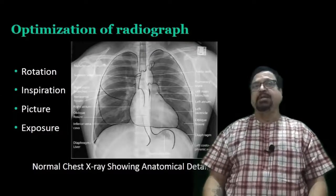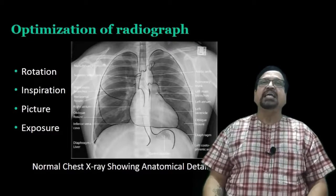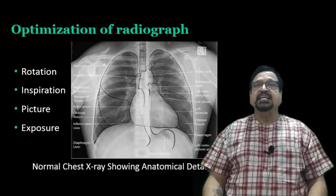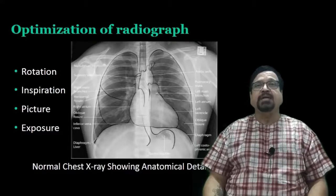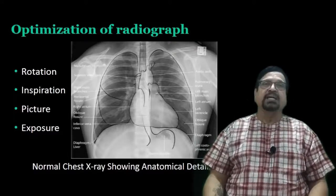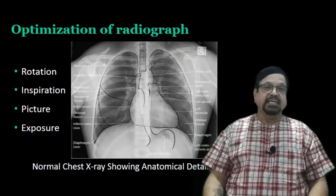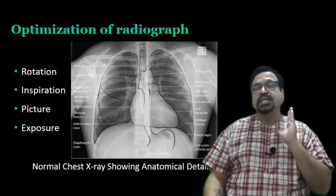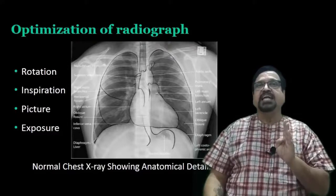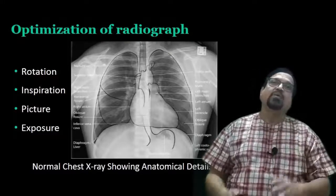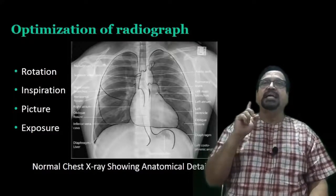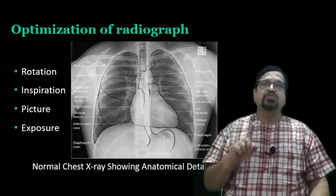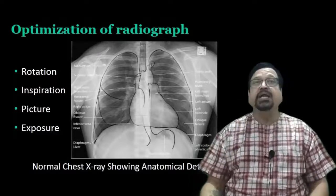Now let us see normal chest anatomy. We are seeing right lung and left lung. Again we are seeing the trachea in the center. Then cardiac borders. The right cardiac border is formed by the right atrium as well as the left ventricle. We can see the aorta - the ascending aorta and superior vena cava will form the right border of the mediastinum. SVC is not routinely prominent. It never bulges outside. The left cardiac border from top to bottom is formed by the aortic arch. The CP angle - that is the cardiophrenic and costophrenic angle - should be clear.